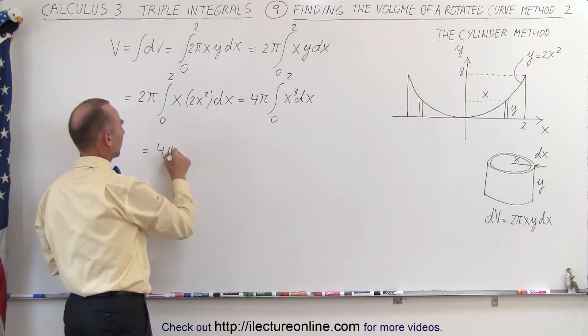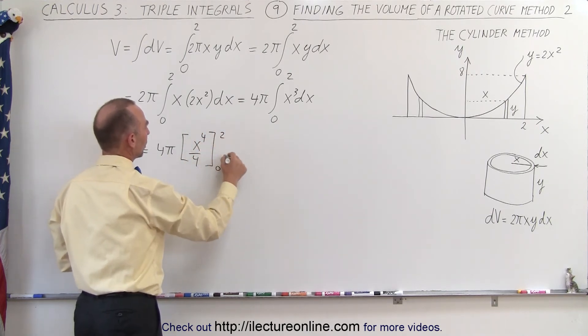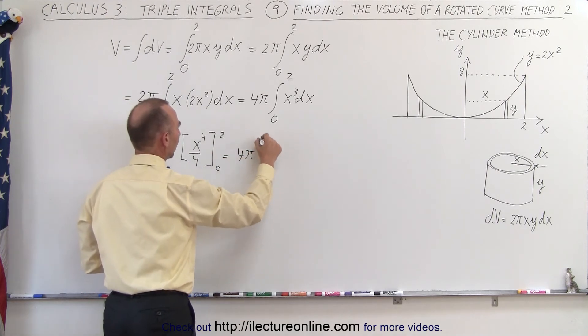So, this is equal to 4 pi times x to the 4th over 4, evaluated from 0 to 2, which is equal to 4 pi times, when plugging the upper limit.